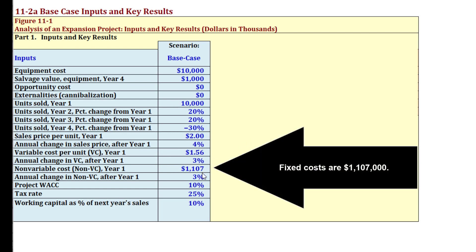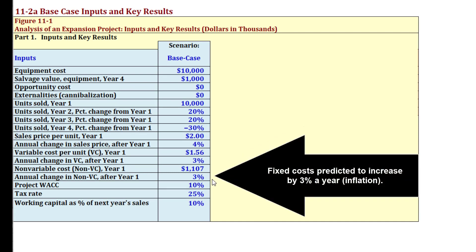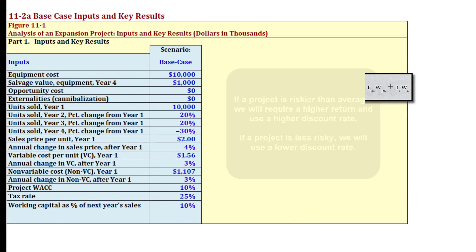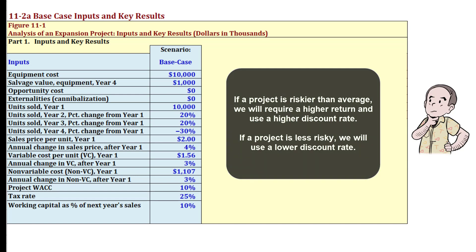Fixed costs are $1,107,000 and we expect them to go up 3% per year. This company has a weighted average cost of capital of 9% — their investors have a required return of 9%. But since this project is riskier than a normal project, we're going to use a 10% discount rate. This is called a risk-adjusted discount rate: if a project is riskier than normal we use a higher rate, and if it's less risky we may use a lower rate.